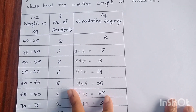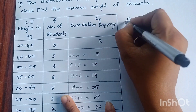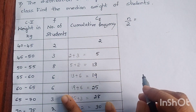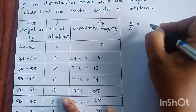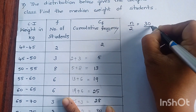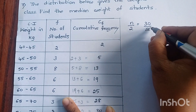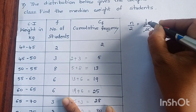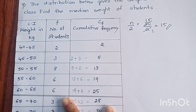Now, first let us compute n by 2 to identify the median class. n by 2 is 30 divided by 2, that is 15. So n by 2 is 15.